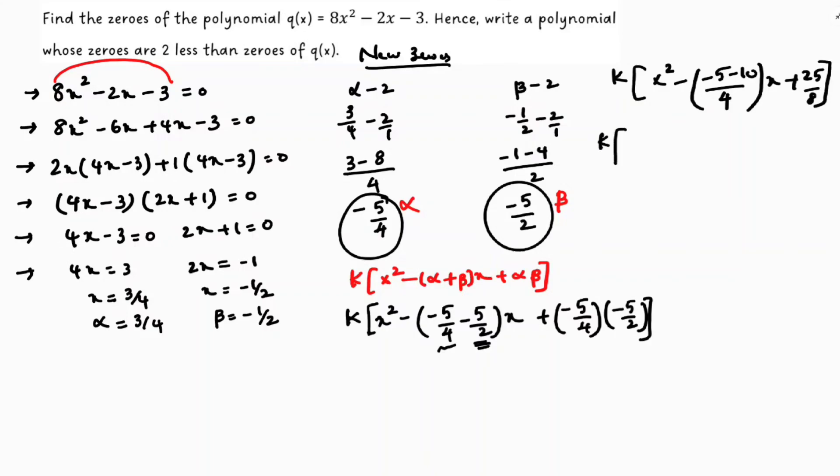Now k into x² minus minus 15 by 4 x plus 25 by 8. Now if we will take LCM, LCM is 8, so here 8x².